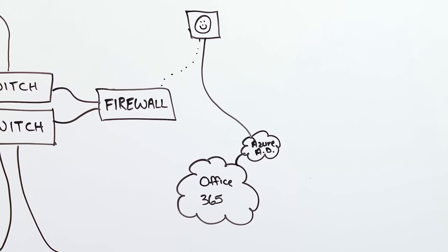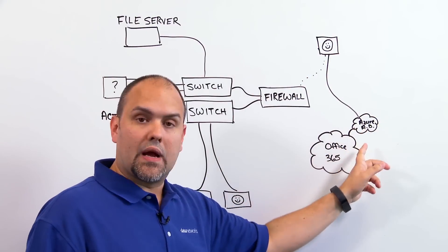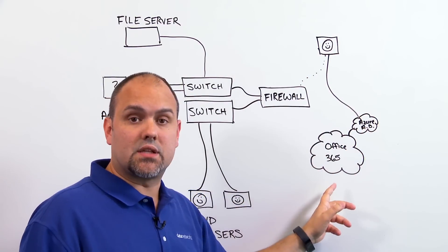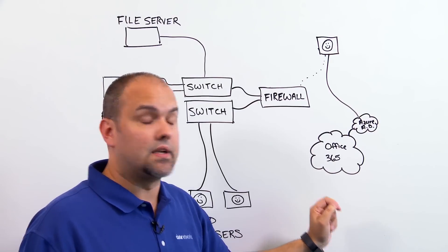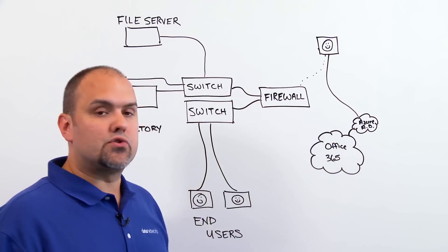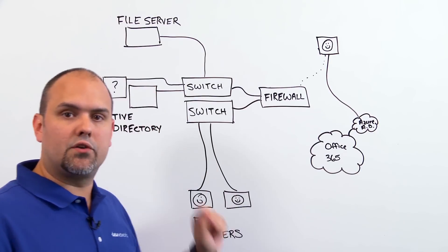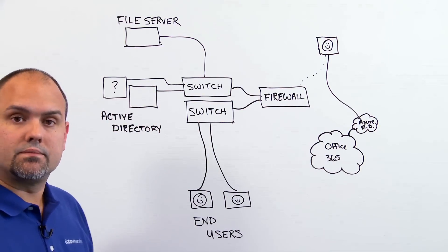Your remote users are no longer fully connected into your environment at all times. They are authenticating directly to Azure Active Directory, utilizing all of the cloud-based services you've moved out there. The only reason these users would need to connect into your environment is if you have internal-based applications they are using. This is just a high-level overview with the basic considerations of an Office 365 migration. A project such as this requires a detailed approach when developing your migration strategy. To begin your transition to the cloud, contact our team at Data Networks — we're available to assist you with your environment assessment at any time.